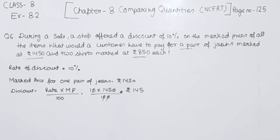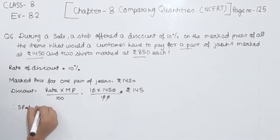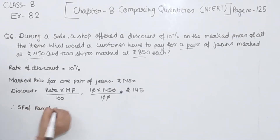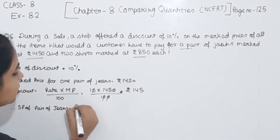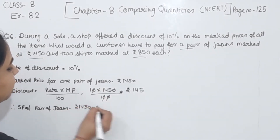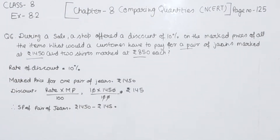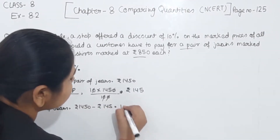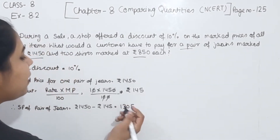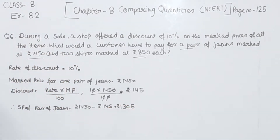Now we find the selling price of the pair of jeans. Selling price = Marked price − Discount = ₹1450 − ₹145 = ₹1305. This is the selling price of the jeans.